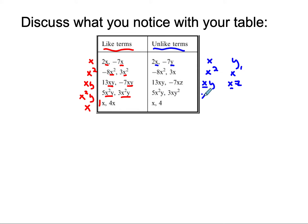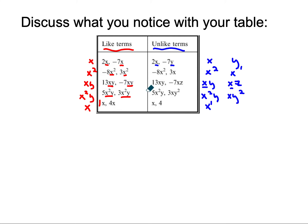This one — they both have an x and a y, but the first one is x squared y and the second one is x y squared. The variable part has to look exactly the same. One has an x to the first and the other one doesn't have an x at all. This number 4 has a special name — it's called a constant, because it's never going to change since it doesn't have a variable beside it.